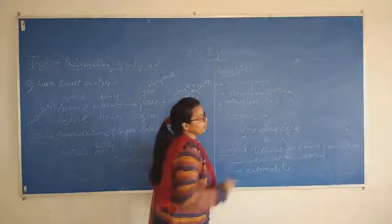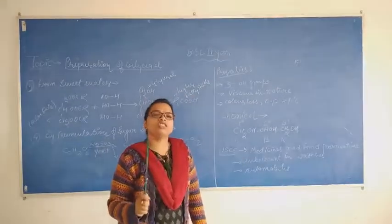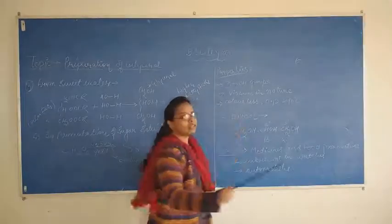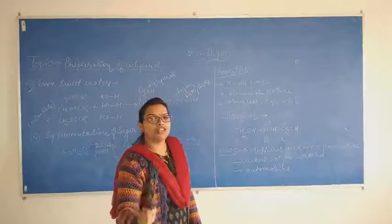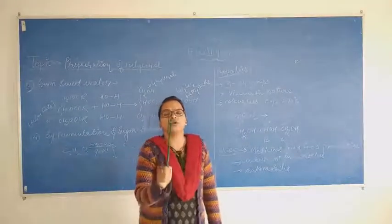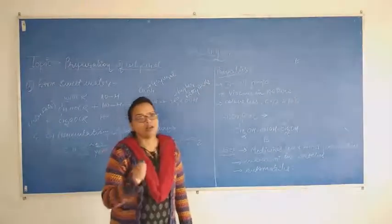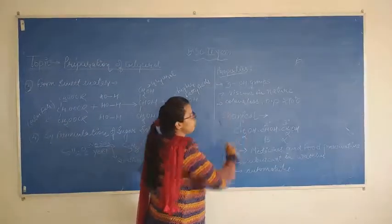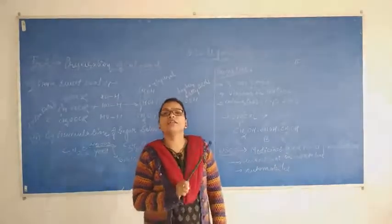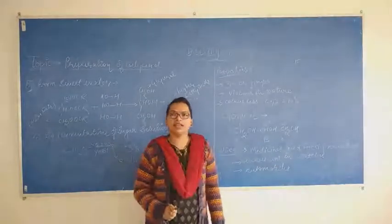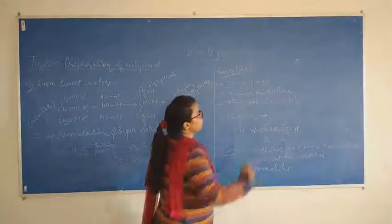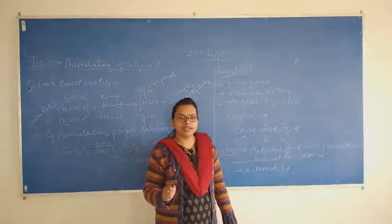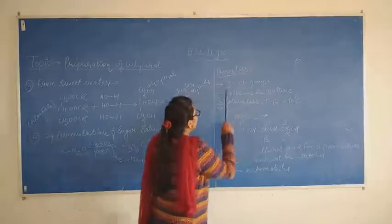This has viscous nature, because of the presence of OH groups. The OH groups are present, so the hydrogen bonds will form between molecules, intermolecular forces will be strong. This is the viscous property of the glycerol. It is colorless, and the boiling point is 290 degrees Celsius. This is your physical property.